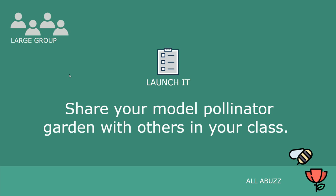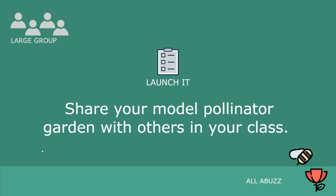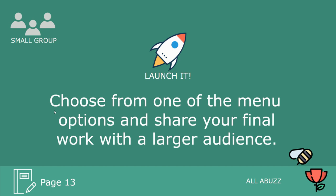Share your model pollinator garden with others in your class. This can mean a couple of things: if you're hands-on and artsy, you can create an actual physical model using stickers or materials. Or you can draw it out — but this sketch should look much better than your initial one. It should have colors, dimensions, and a key. Try to make it look like a landscape architect's scheme. You can do either a detailed sketch or a physical model made from materials in the classroom. Then choose from one of the menu options to share your final work with a larger audience — really just me when I grade it.